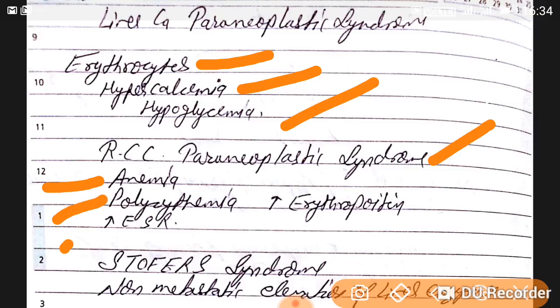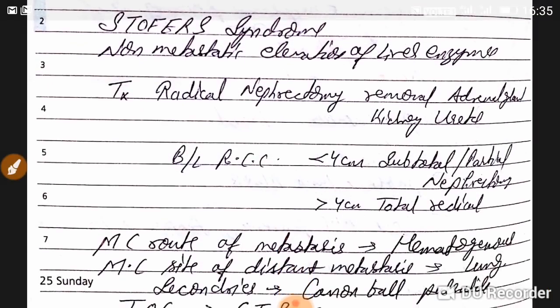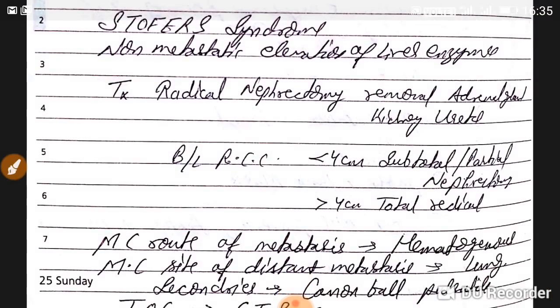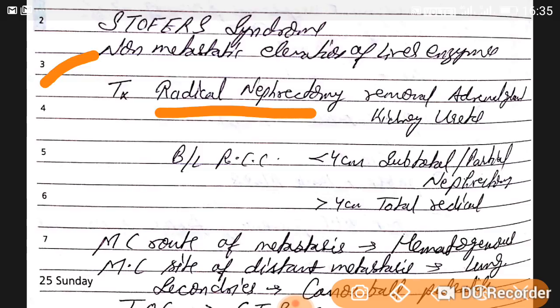In renal cell carcinoma, we also see Stauffer syndrome — a non-metastatic, non-metabolic elevation of liver enzymes. This is an important paraneoplastic syndrome to remember. The treatment for RCC is radical nephrectomy, which involves removal of the adrenal gland, kidney, and ureter — all three.